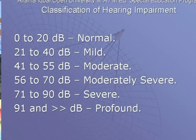Yeh hamari degrees of hearing loss batati hai: 0 se 20 normal hai, 21 se 40 tak mild hai, 41 se 55 tak moderate hai, 56 se 70 tak moderately severe hai, 71 se 90 tak severe hai, aur 91 se onwards dB profound hearing loss hai.